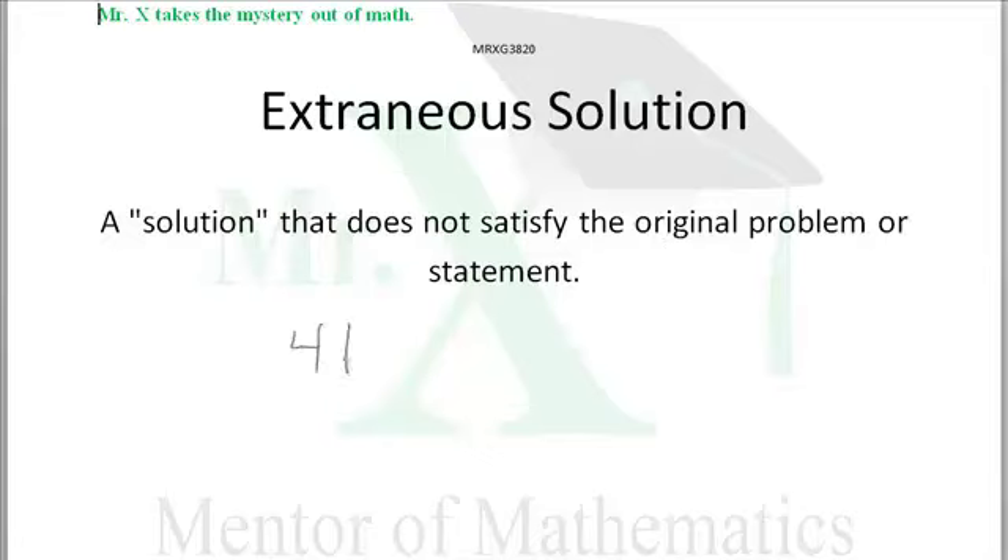4 plus the square root of X equals 3. Now we're going to subtract 4 from both sides and get the square root of X equals negative 1.